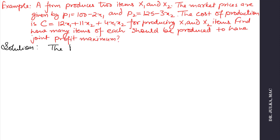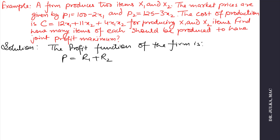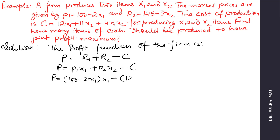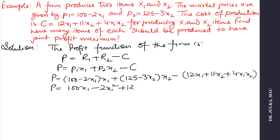The profit function of the firm is P equals R1 plus R2 minus C. R1 is p1·x1 and R2 is p2·x2. We replace p1 by 100 minus 2x1 and p2 by 125 minus 3x2, and C by 12x1 plus 11x2 plus 4x1x2.